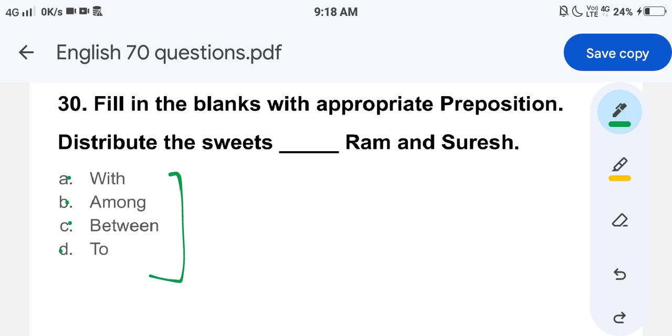So in these options, which one seems suitable? The answer is B, among. Why so? Let me repeat the explanation again. How was among used? It is also used to indicate that something is being divided or shared among two or more people. Here, what is happening? Sweets are being distributed between Ram and Suresh. So distribute the sweets among Ram and Suresh. That's it for today and I hope you understood the questions well. I wish you all the best and have a great day. Bye!